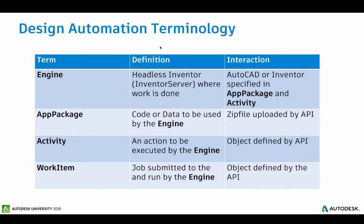That activity specifies an interface into the app package — what will actually get executed. Then a work item comes along and it's the thing that actually does the work, the actual job submitted to the engine. There are basically two phases: the setup phase and the run phase. In the setup phase, you'll configure your Inventor plugin, iLogic, any static data, create your app package, upload it, and define what can actually be done on that app package. That's typically done one time.